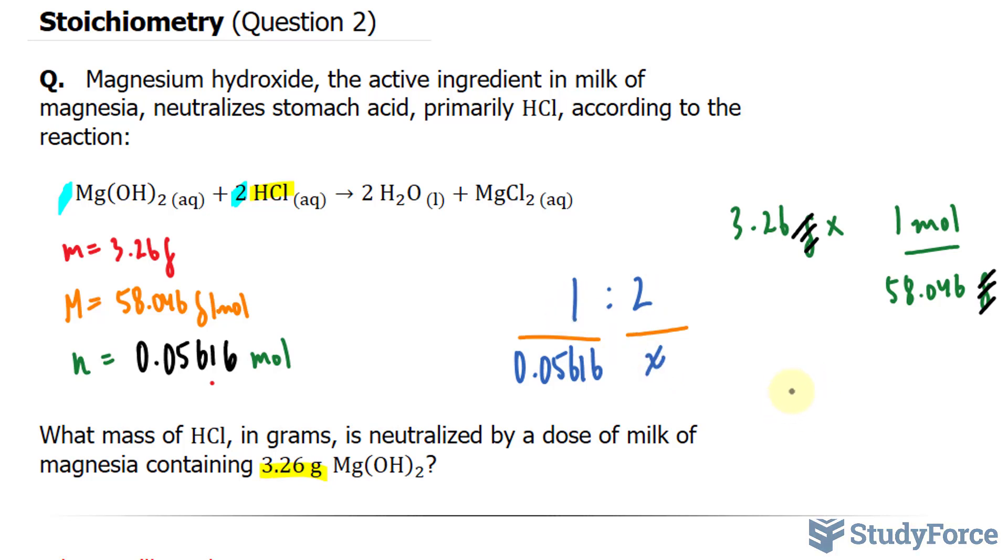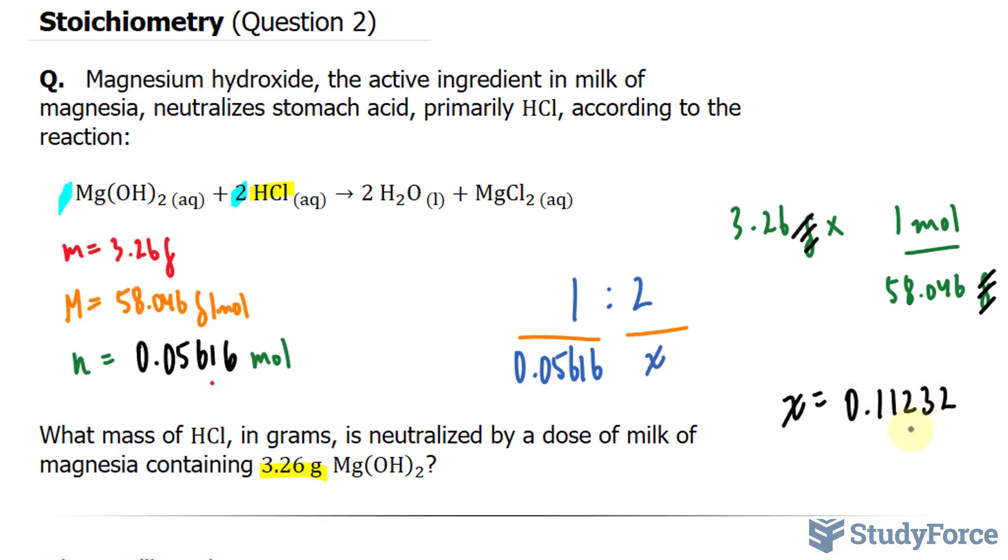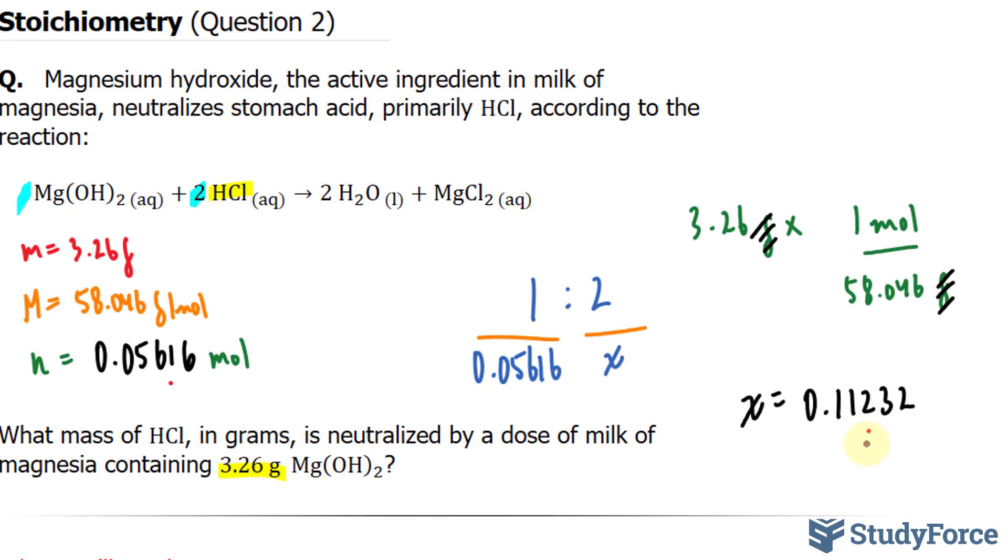You end up with x, because x times 1 is x, equals 2 times this number. 2 times 0.05616 gives me 0.11232. Remember, nothing after this 2 is significant, so I'll put a dot right there. This represents the number of moles of HCl. 0.11232 moles.